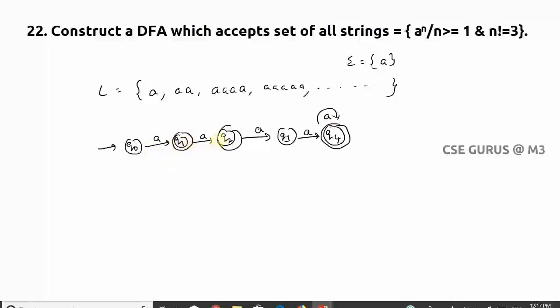Now you can observe: one 'a' final state, two a's final state, three a's non-final, four a's final state, five, six, seven up to infinity.